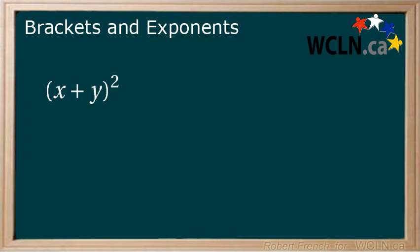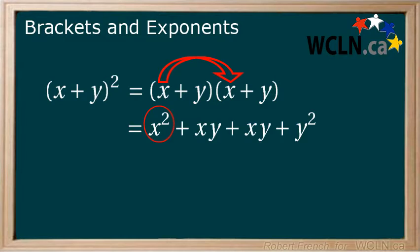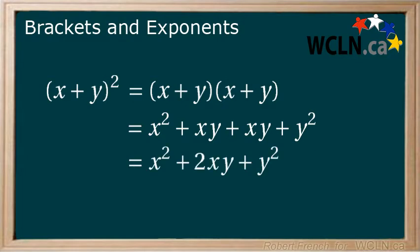Let's apply this to our example. x plus y squared equals x plus y in brackets multiplied by x plus y. Now, using FOIL, we get x squared plus xy plus xy plus y squared. Combine the middle terms and you have x squared plus 2xy plus y squared.